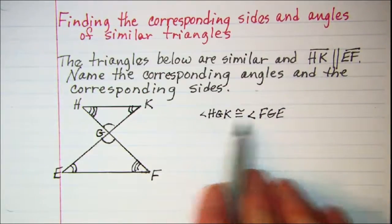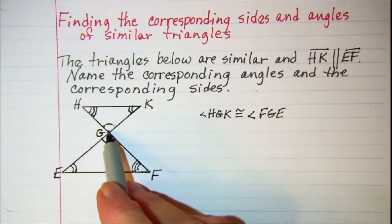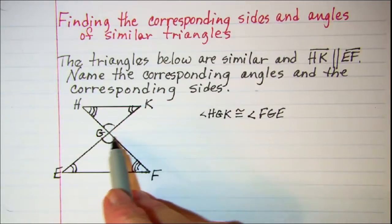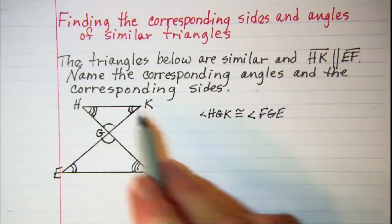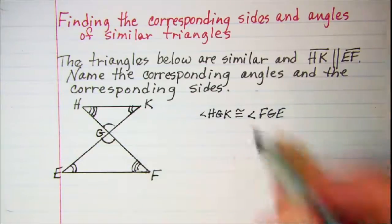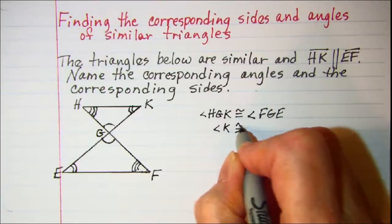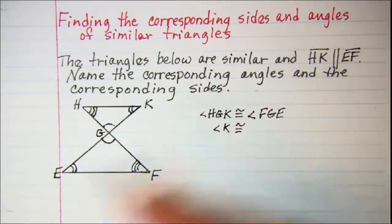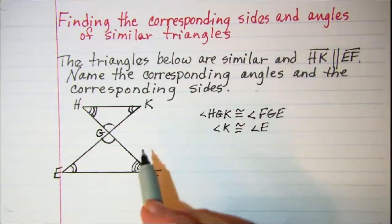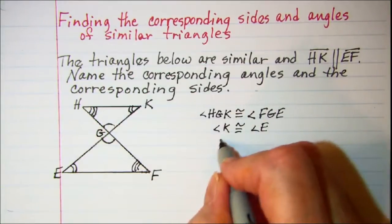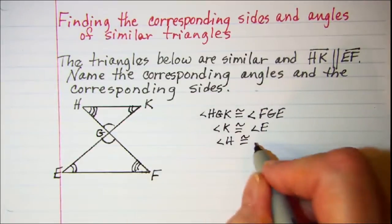We have to use three letters here because we can't call it angle G since there are four angles with the vertex of G. Our other two angles: angle K is congruent to angle E, and angle H is congruent to angle F.